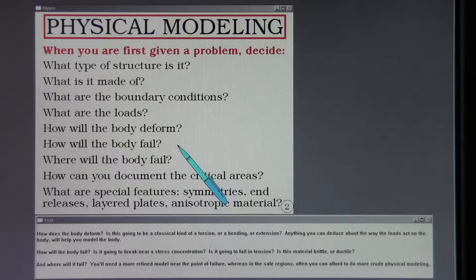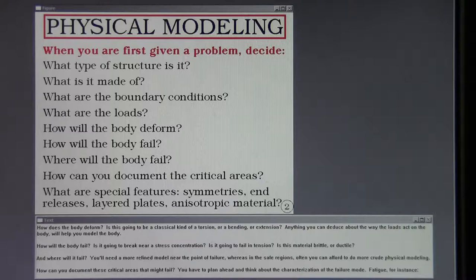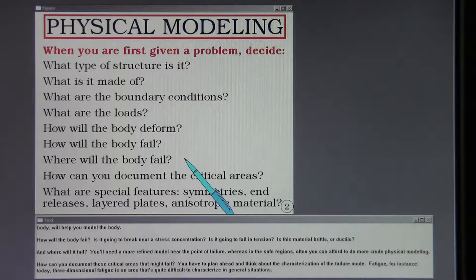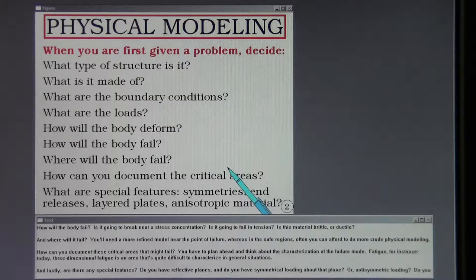How will the body fail? Is it going to break near a stress concentration? Is it going to fail in tension? Is this material brittle or ductile? And where will it fail? You'll need a more refined model near the point of failure, whereas in the safe regions often you can afford to do more crude physical modeling. How can you document these critical areas that might fail? You have to plan ahead and think about the characterization of the failure mode.